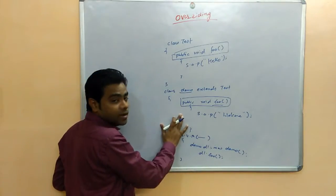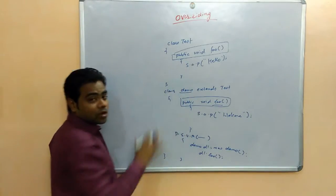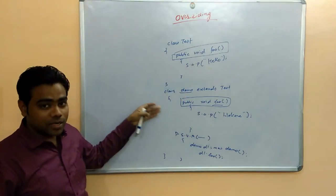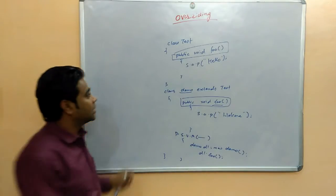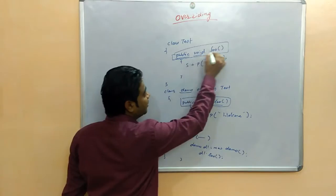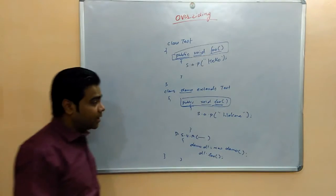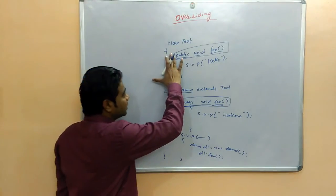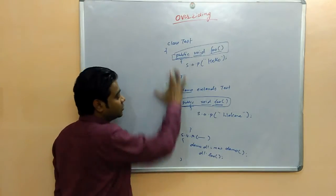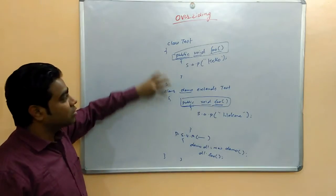This method is for overriding. The method signature must be the same in the child class. Method signature means that access modifiers, return type, and method name must be exactly the same — that is the method signature. So what is method overriding?